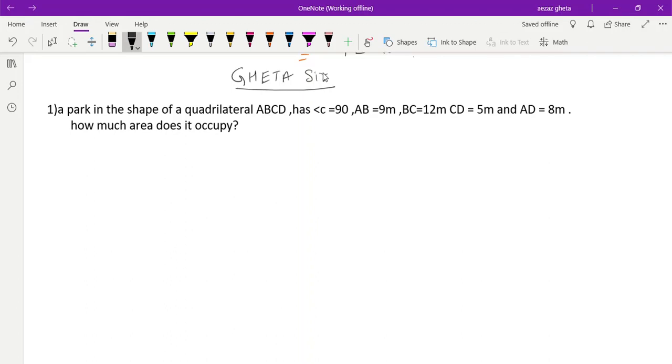Let us draw one quadrilateral ABCD. They mentioned that angle C is 90 degrees. AB is 9, BC is 12, CD is 5, and AD is 8. Now we should find how much area this quadrilateral occupies.